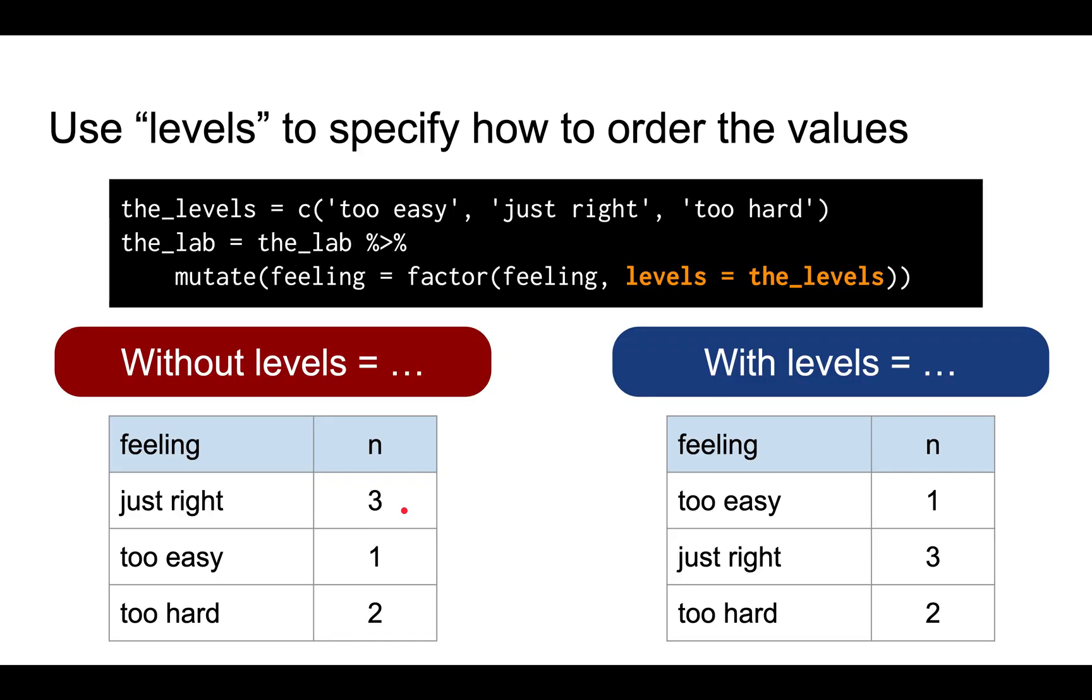However, it's clear that for too easy, just right, and too hard, this is kind of the natural order of the values from easiest to hardest.